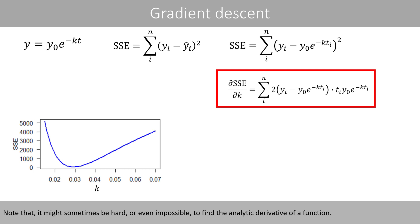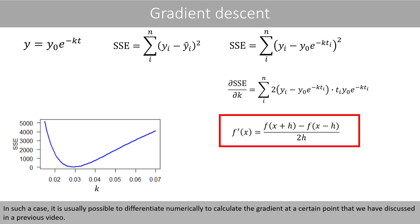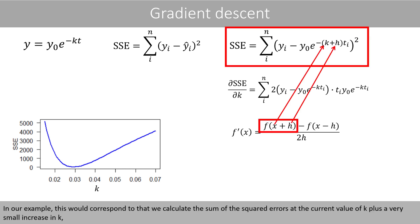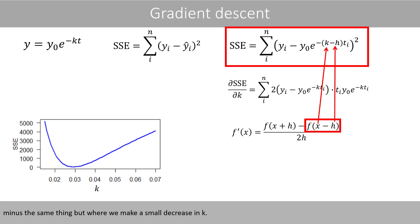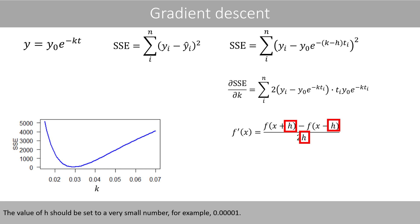Note that it might sometimes be hard or even impossible to find the analytic derivative of a function. In such a case, it is usually possible to differentiate numerically to calculate the gradient at a certain point. In our example, this would correspond to calculating the sum of the squared errors at the current value of k plus a very small increase in k, minus the same thing but where we make a small decrease in k. The value of h should be set to a very small number, for example 0.00001.